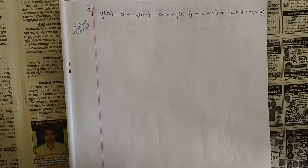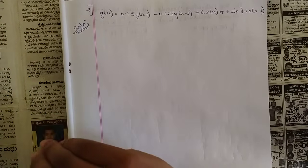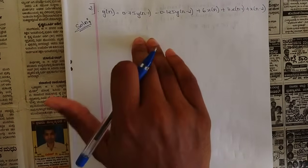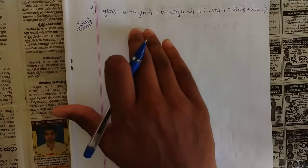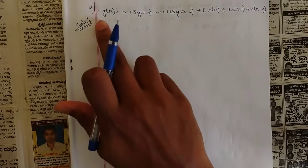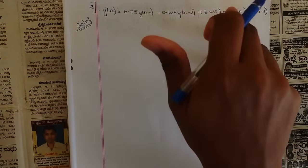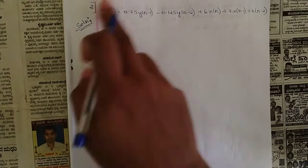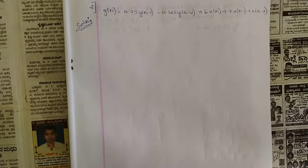Hello everyone, welcome back to our channel. In our previous video we started with the concept of IIR structures from module 5. IIR structures have two different types of forms: Direct Form 1 (DF1) and Direct Form 2 (DF2). We discussed how to use DF1 and DF2 to solve the IIR system equation. The IIR system equation consists of both x(n) and y(n) terms. Our goal is to bring y(n) to one side and all other terms to the other side, and then use the direct form structures to draw the block diagrams.